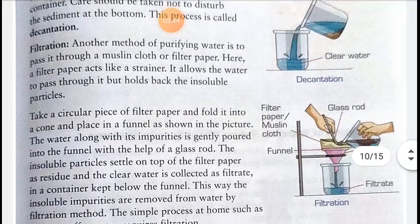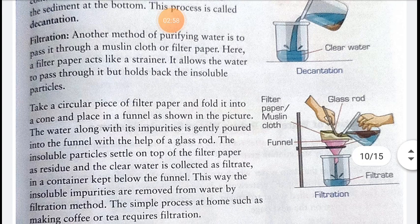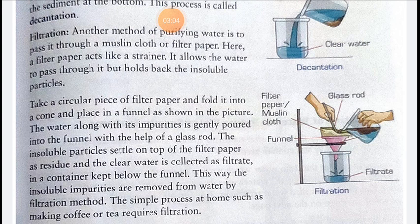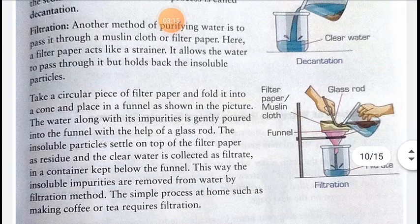The next method is filtration. Filtration is another method of purifying water in which water is passed through a muslin cloth or filter paper. As seen in the diagram, a filter paper acts like a strainer — it allows water to pass through but holds back insoluble particles. We take a circular piece of filter paper, fold it into a cone, and place it in a funnel.